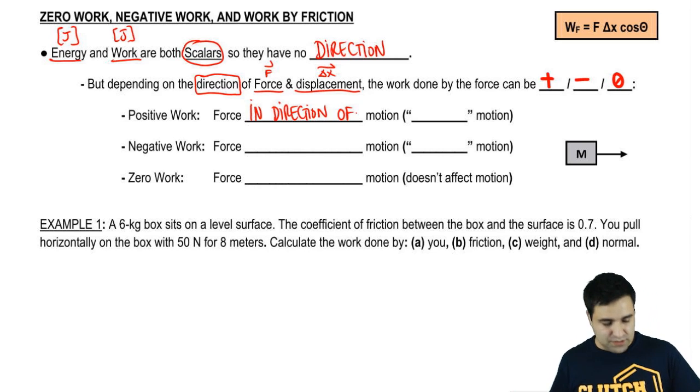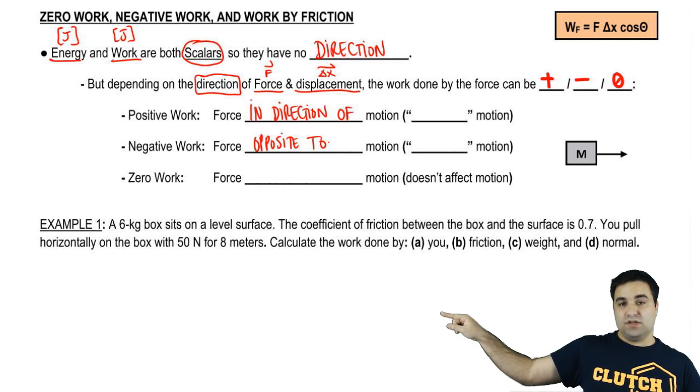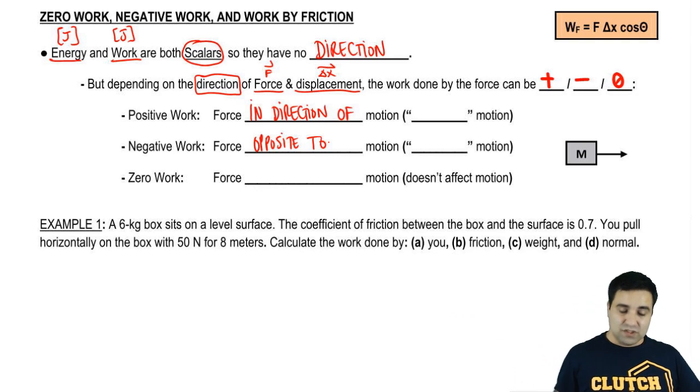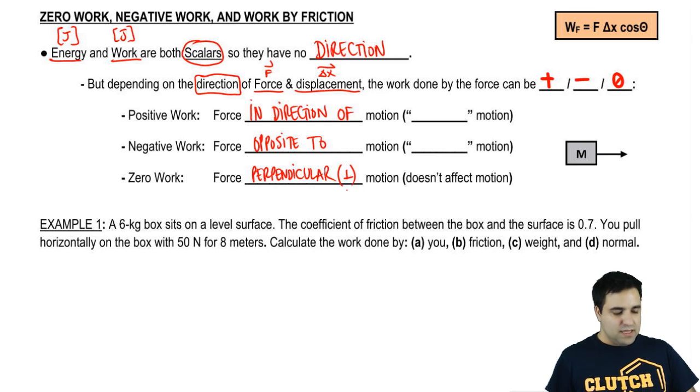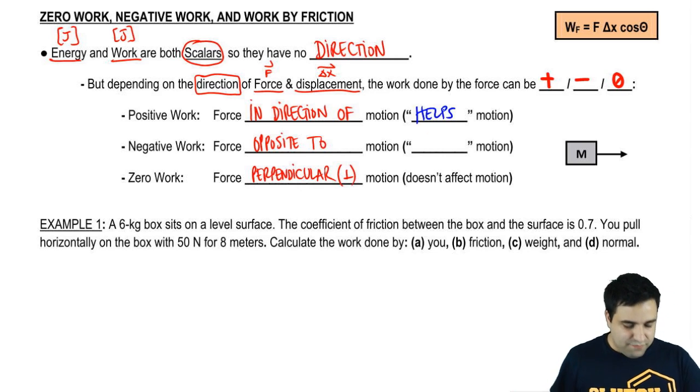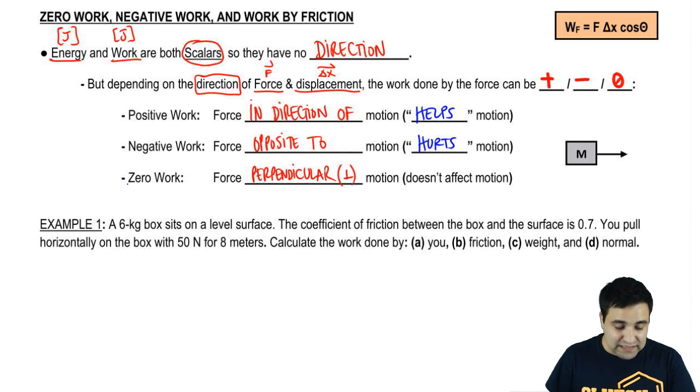Negative work is when you're opposite to motion. And if you're neither directly in the direction nor directly against work, if instead you're perpendicular to the direction of motion—perpendicular has this symbol, 90 degrees—then your work will be zero, the force will do no work. One way that you can think about this is positive work if it helps motion, negative work if it hurts motion, and zero work if it doesn't affect the motion at all.